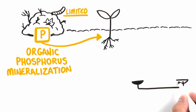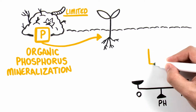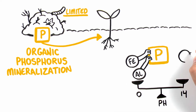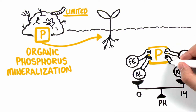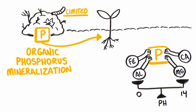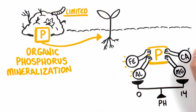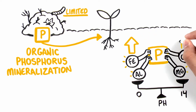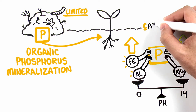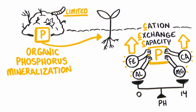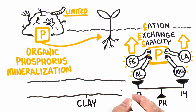Soil pH can also affect phosphorus availability. When soils are too acidic, iron and aluminum tie up available phosphorus, and in alkaline soil, calcium and magnesium reduce its availability. This means the amount of iron, aluminum, calcium, and magnesium in soils that is available to react with phosphorus is important, and can increase with the cation exchange capacity, CEC, and clay content in soils.